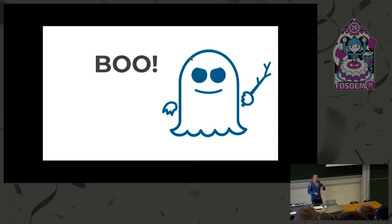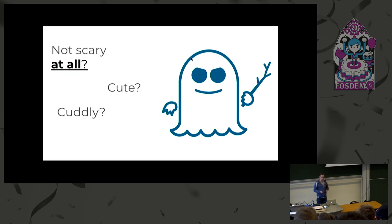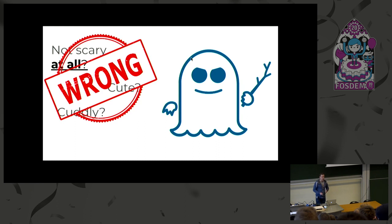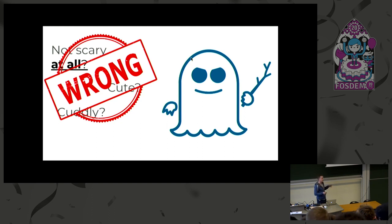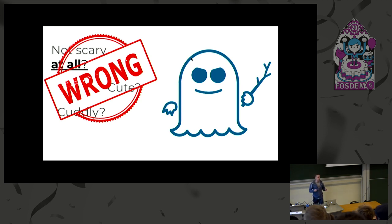You think it's actually kind of cute and cuddly? Well, let me tell you something — you are wrong. Because this is a vicious beast. This is Spectre. This is a speculative vulnerability that was detected a few years ago, and it allows attackers to bypass common memory safety techniques that have been deployed for many years.